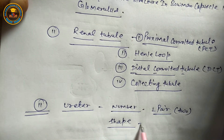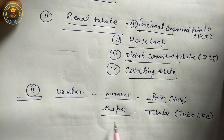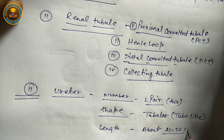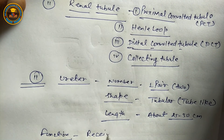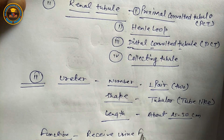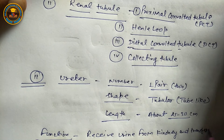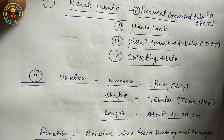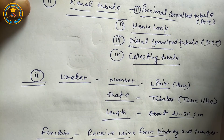Length of ureter: about 25 to 30 centimeters. Function: to receive urine from the kidney and transfer it into the urinary bladder.